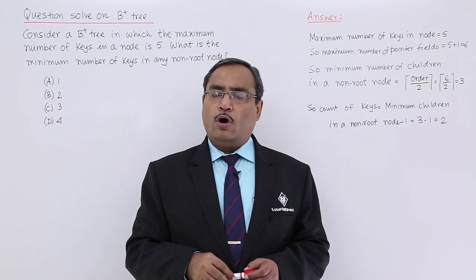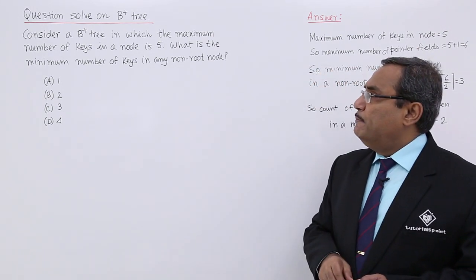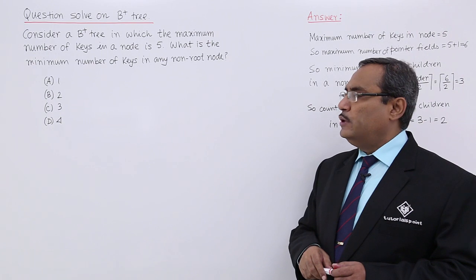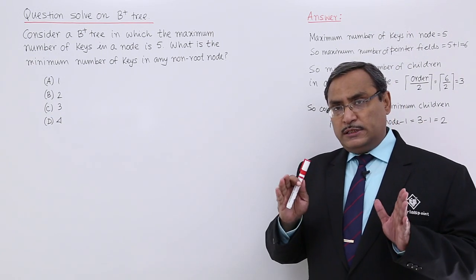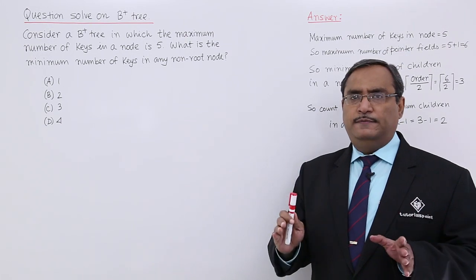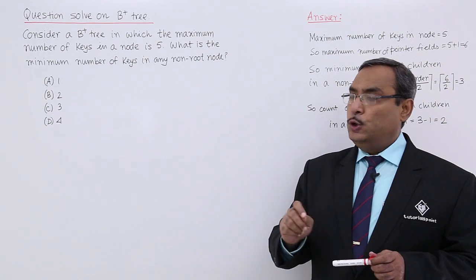Let us solve one problem on B+ tree. Here is the problem for us. Consider a B+3 tree in which the maximum number of keys in a node is 5. That means they are telling that the maximum number of search keys in a node is 5. So that means we shall be having 5 plus 1, that is 6, pointer fields in a node.